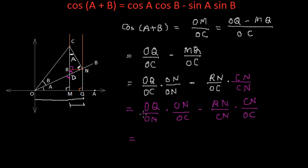This can be written as OQ by ON multiplied by ON by OC minus RN by CN multiplied by CN by OC. So, OQ by ON both are there in triangle ONQ this triangle and OQ by ON is actually the base by hypotenuse for this angle A. So, OQ by ON can be written as cos A.